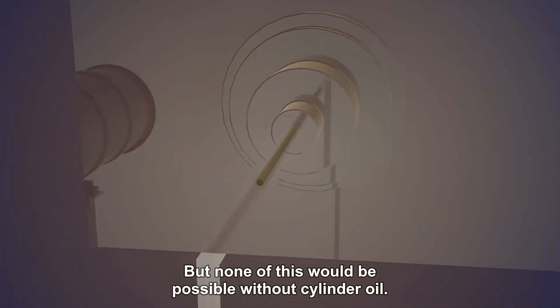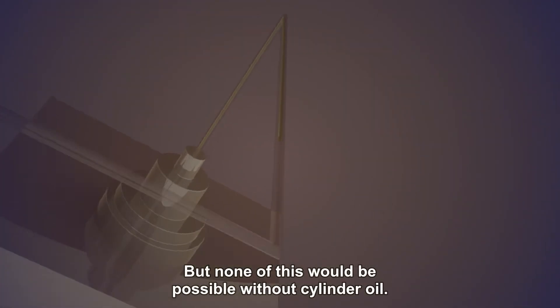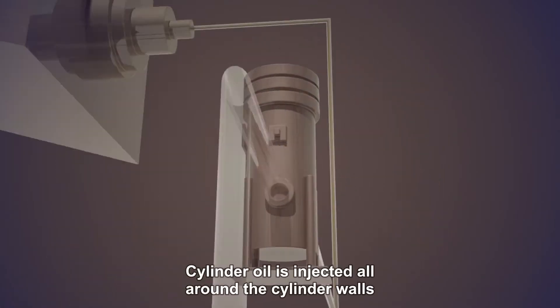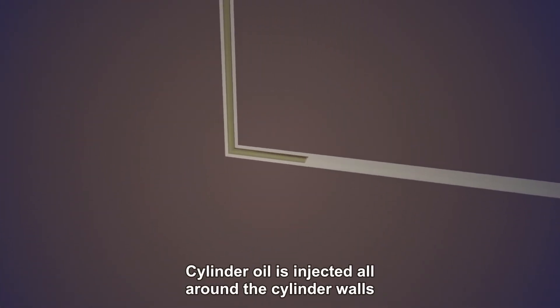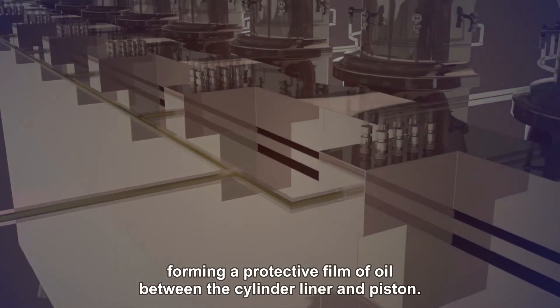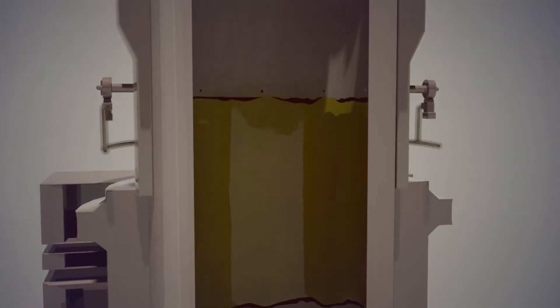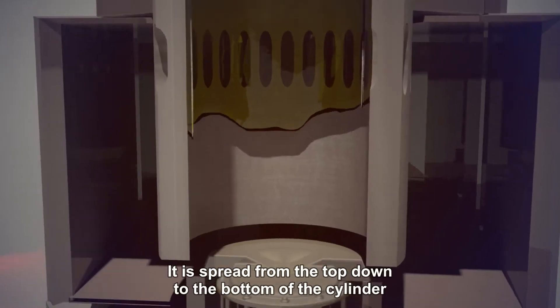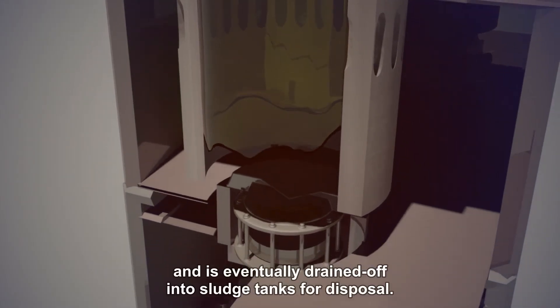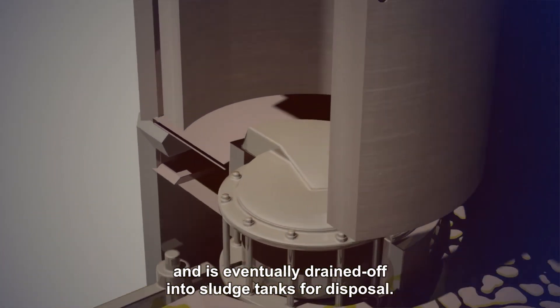But none of this would be possible without cylinder oil. Cylinder oil is injected all around the cylinder walls, forming a protective film of oil between the cylinder liner and piston. It is spread from the top down to the bottom of the cylinder and is eventually drained off into sludge tanks for disposal.